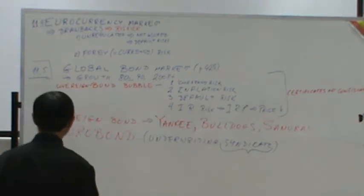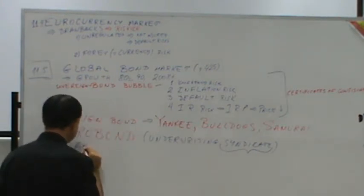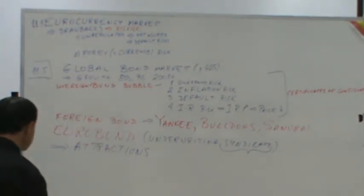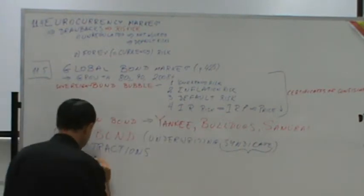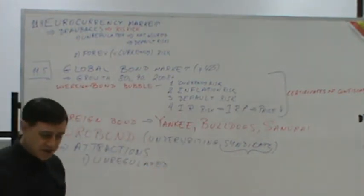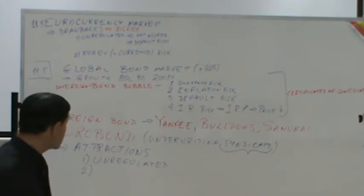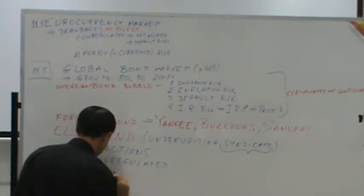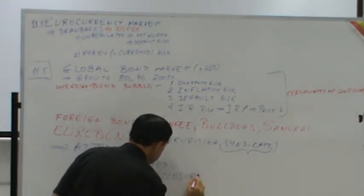And now we're back to the same concept that I did with the euro-dollar market, is attractions. So what are the primary attractions? Number one, relatively unregulated. You don't have government interference and a whole bunch of other things. So part of the unregulation, I can now put a subset or a separate, is minimum disclosure or less disclosure.